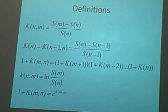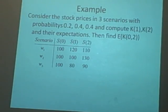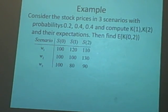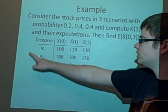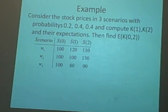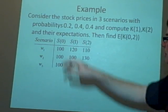Now we've got an example to look at some of this stuff. Consider the stock prices in three scenarios W1, W2, W3 with probabilities 0.2, 0.4, and 0.4, so they add up to 1. We want to compute K(1) and K(2), and then find the expectation of K(0,2) and their expectations.